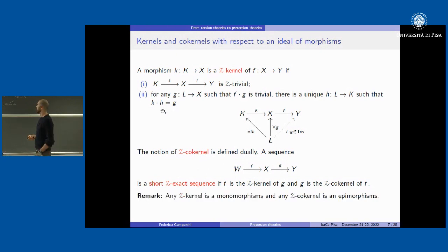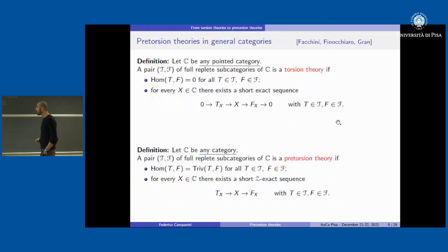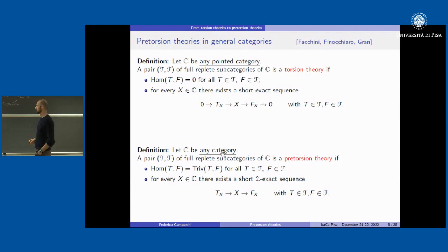Every Z-kernel is a monomorphism and every Z-cokernel is an epimorphism. So now we have the classical definition and here the new one: a pair (T, F) is a pretorsion theory if we replace zero with Z-trivial everywhere essentially — there are no non-trivial morphisms from something in T to something in F, and for every X in C there exists a Z-short exact sequence with the first term in T and the last term in F.